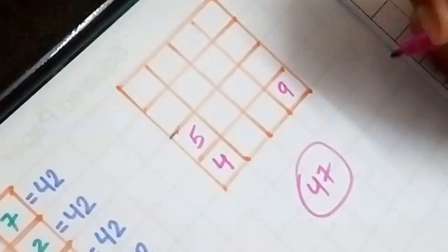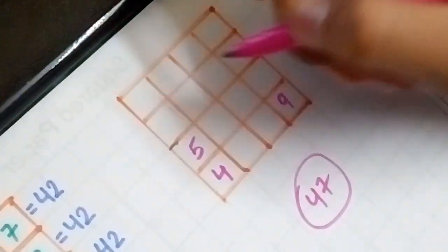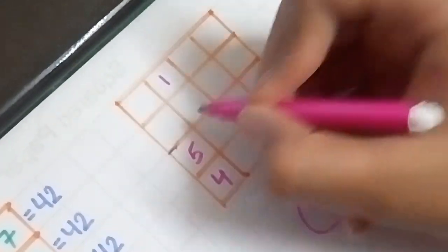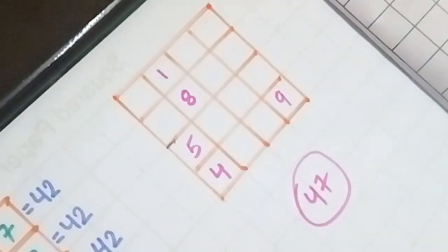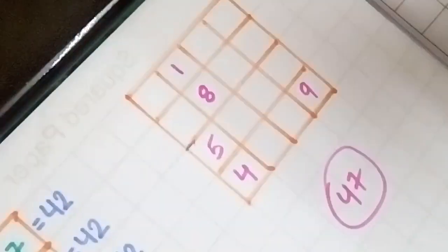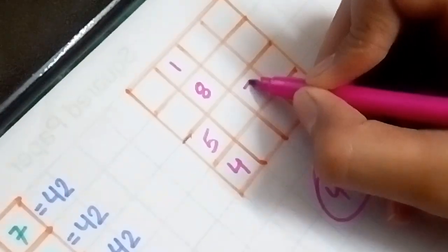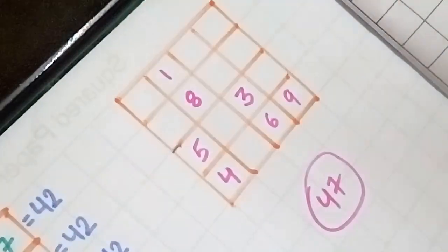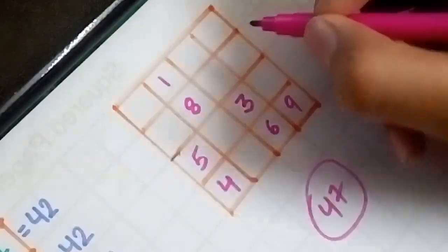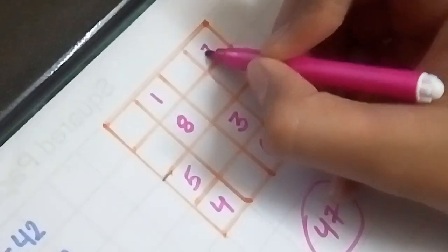Similarly, second pair is 1 and 8, so 1 here and 8 here. And the same way, third pair is 3 and 6. 3 is here, 6 is here. And the last pair is 7 and 2, which you write here.